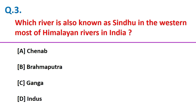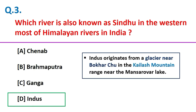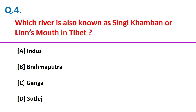Which river is also known as Sindhu, the westernmost of Himalayan rivers in India? Indus. Indus originates from a glacier near Bokhar Chu in the Kailas mountain ridge near Mansarovar Lake. Which river is also known as Shingi Khamban or Lion's Mouth in Tibet? Indus.